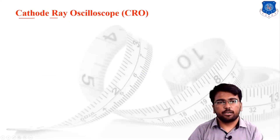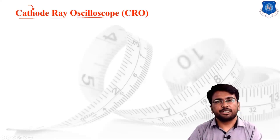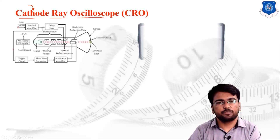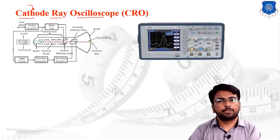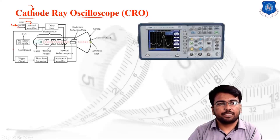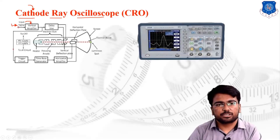The next topic is the cathode ray oscilloscope (CRO). As the name suggests, cathode rays are used to generate an effect over the screen. The figure shows the basic constructional features of the cathode ray oscilloscope, including a three-dimensional pictorial representation of the CRO. In the CRO, the input signal is provided first to the vertical amplifier, which amplifies the signal in the vertical direction.